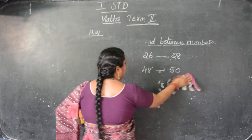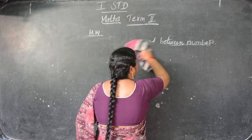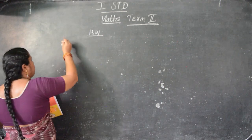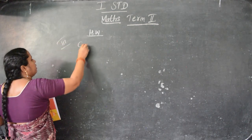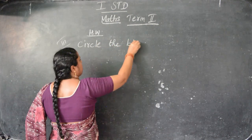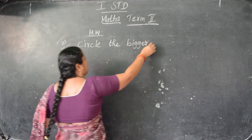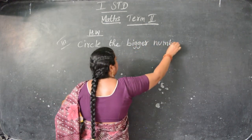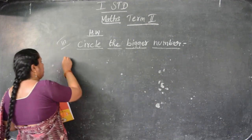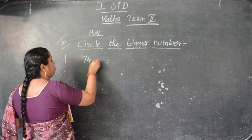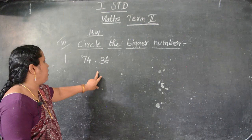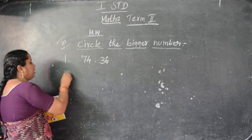Third homework: Circle the bigger number. They are given two numbers - in that, you have to circle the bigger number. So 74, 36 - you have to circle the bigger number. Which one is bigger? 74. So you have to circle it. Like that, you have to do, children.